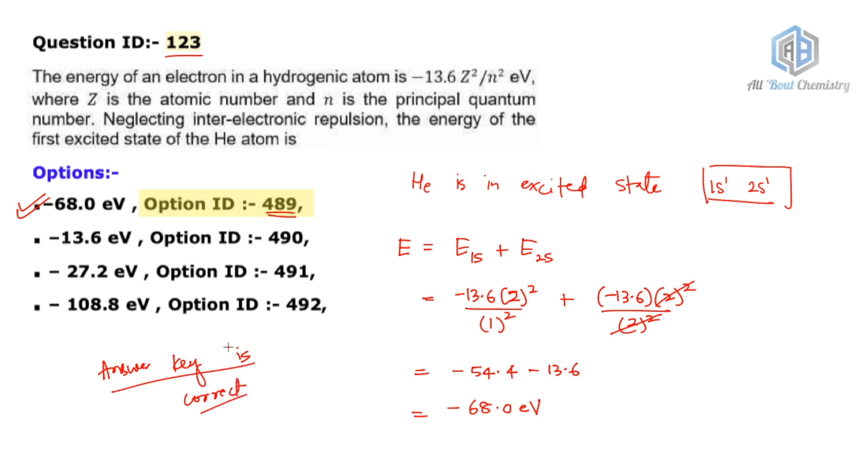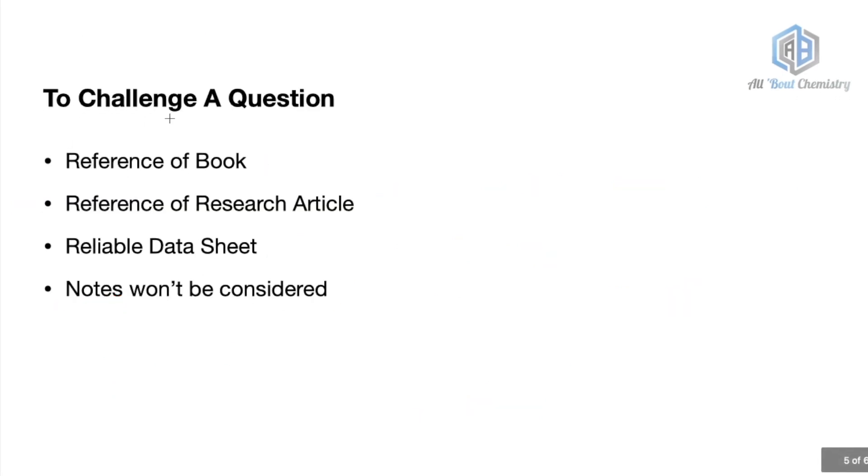Let us talk about how exactly you can challenge the question. What are the things which are needed to be challenged? In order to challenge a question, either you should have a reference from a book, a known book, or you should have a reference from a research article, or you should be having reference of a reliable data sheet like some periodic table is there, or some molecular mass or melting point, boiling points. These values are already noted or these are already reported values. So if you have some of those reliable data, that is also accepted as a reference.